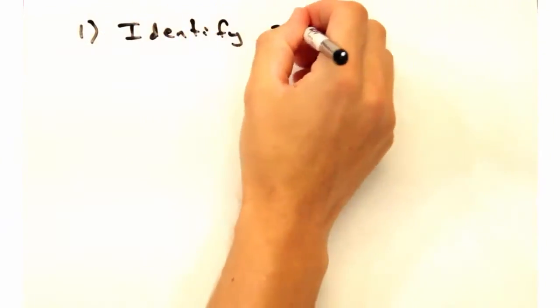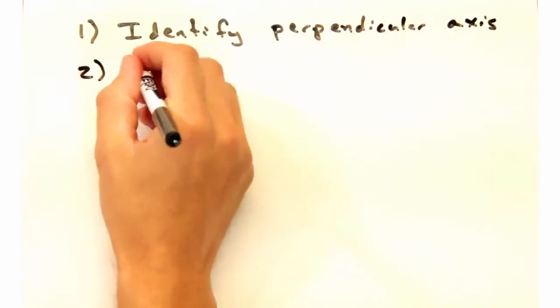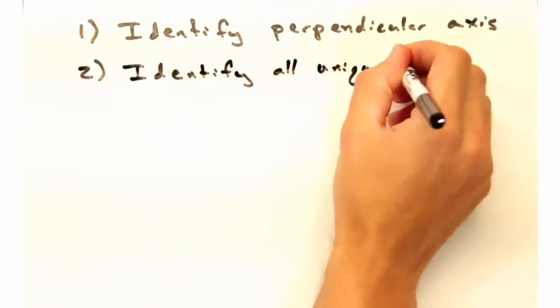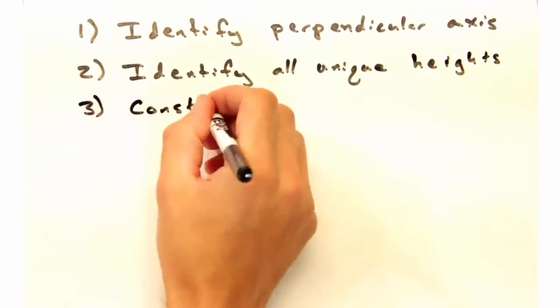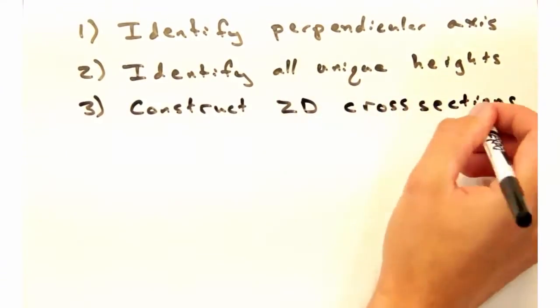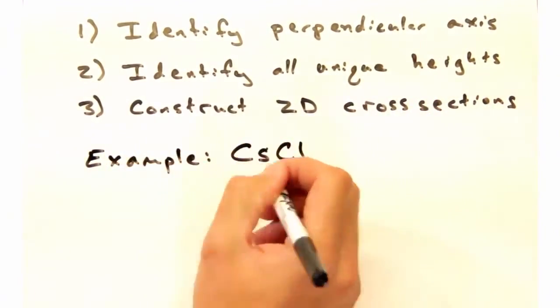So once we identify our perpendicular axis, we'll want to label all the atom locations in terms of height in A3. And once we know that, we can construct two-dimensional cross-sections at each of those heights.